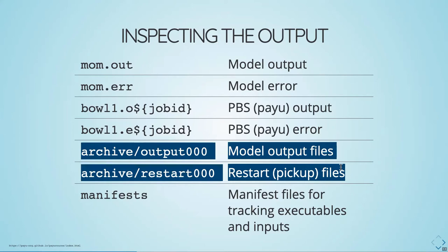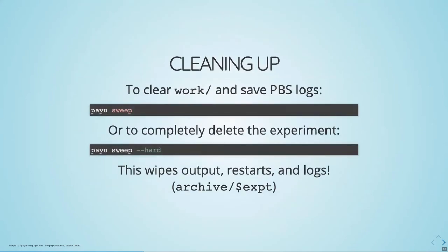Once it's finished running successfully, you should get an output and a restart directory in your archive, and the manifests will get updated. To get rid of all the log files that accumulate: PayU sweep. If you've made a mistake and want a completely fresh start, you can do PayU sweep --hard. That will remove everything: the outputs, restarts, logs, and archive. It won't ask for permission, so make sure you really want to do that before you do it — it'll be gone and it's not backed up.